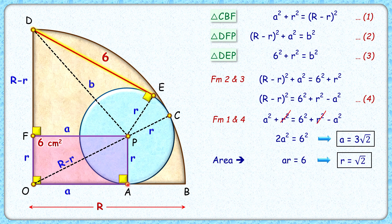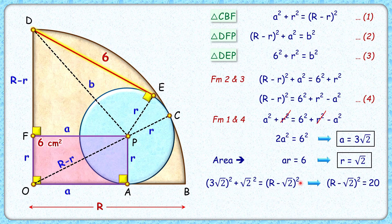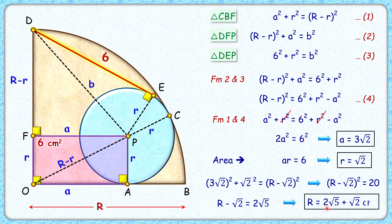Now in the first equation, putting the value of a as 3√2 and r as √2 and solving, we get (R − √2)² = 20, so R − √2 = 2√5, and therefore R, the radius of this quadrant, equals 2√5 + √2 centimeters. That's our answer! I hope you enjoyed the solution — see you in the next video, tata bye bye!